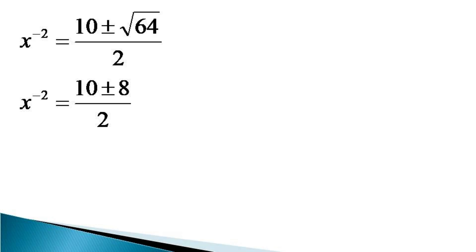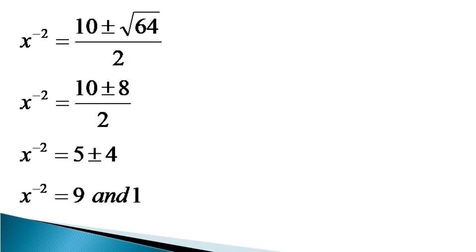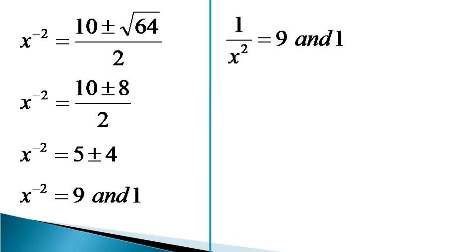So the value of x raised to the power minus 2 becomes equal to 5 plus or minus 4. This gives us two values of x raised to the power minus 2: 9 and 1. The solution can be expressed as 1 by x squared equals 9 and 1 by x squared equals 1.